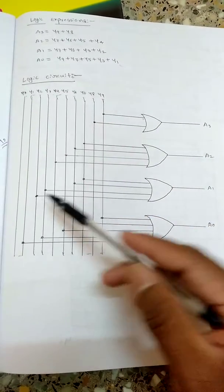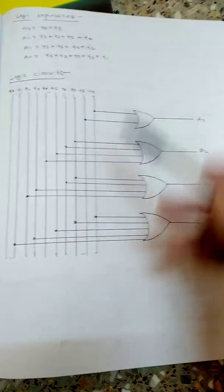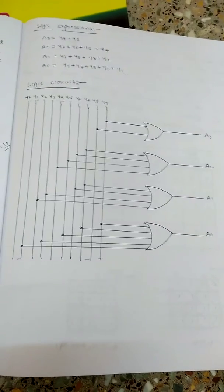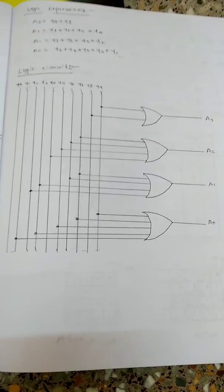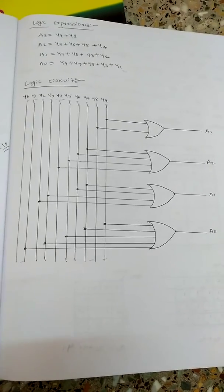Similarly for a1, I will be shorting seven, six, three, two. Then for a0, nine, seven, five, three, one. So like this I can get the output, that is the circuit for the decimal to BCD encoder.